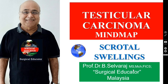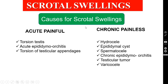I am going to discuss one more mind map on testicular carcinoma, which is a scrotal swelling. As I mentioned in other videos, the causes for scrotal swelling can be divided broadly into acute painful conditions and chronic painless conditions. The acute painful conditions are torsion testis, acute epididymo-orchitis, and torsion of testicular appendages. The chronic painless conditions are hydrocele, epididymal cysts, spermatocele, and varicocele, which are cystic swellings. Whereas the solid swellings consist of chronic epididymo-orchitis and testicular carcinoma.